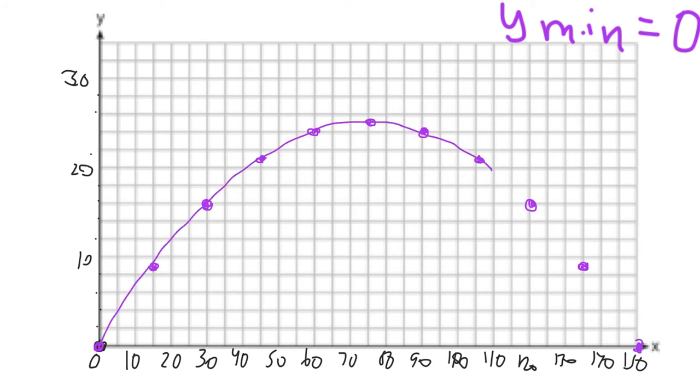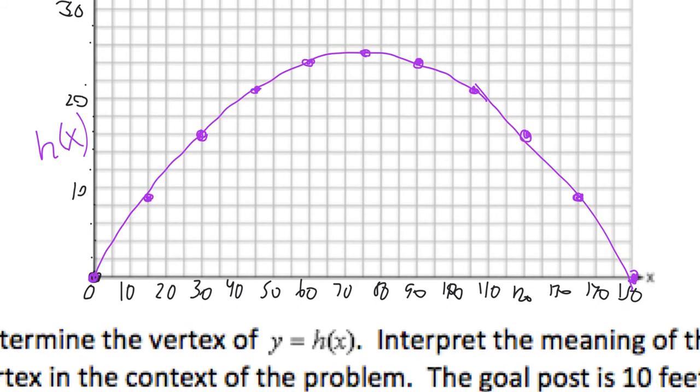Let's connect these guys together. Now we've got a graph. And of course, it'd be good to label our axes here. We've got h of x along the y axis, and x, which is the horizontal distance. And these are both in feet.